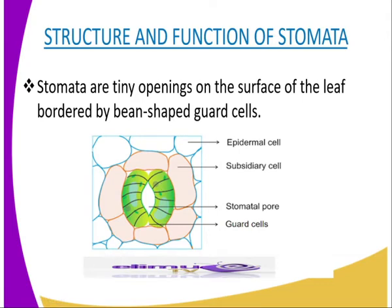The guard cells exist in pairs — as you can see, there are two — and are structurally adapted to their function by having chloroplasts for photosynthesis. These guard cells have got chloroplasts, and remember that the function of the chloroplasts is to trap light energy, which is responsible for photosynthesis. The inner walls of the guard cells are thick and less elastic than the outer walls, which are thin and elastic. This causes the outer walls to stretch more than the inner walls.